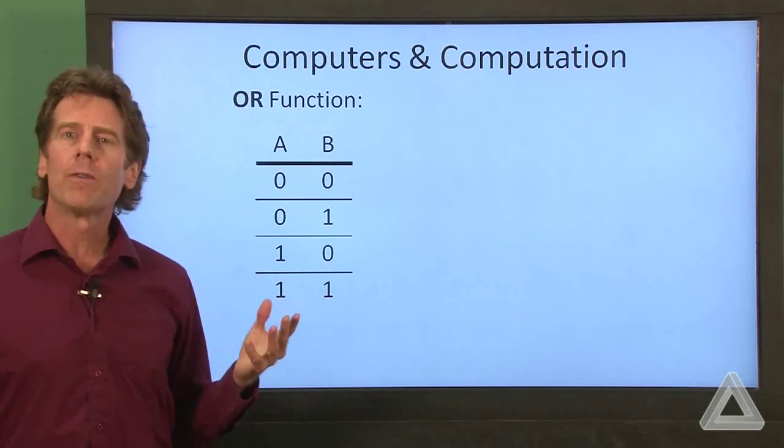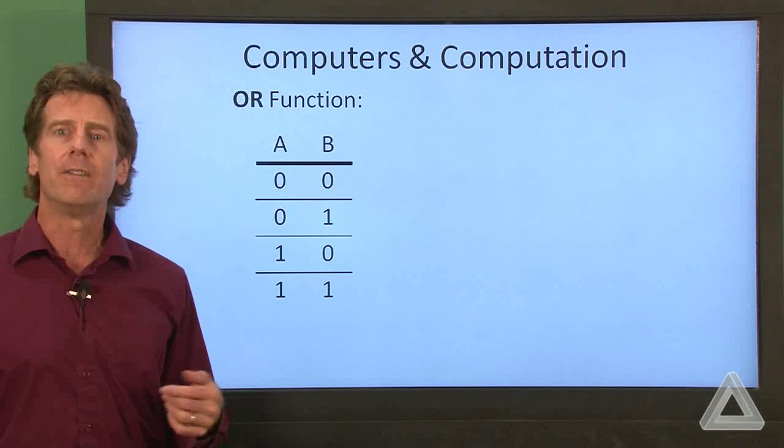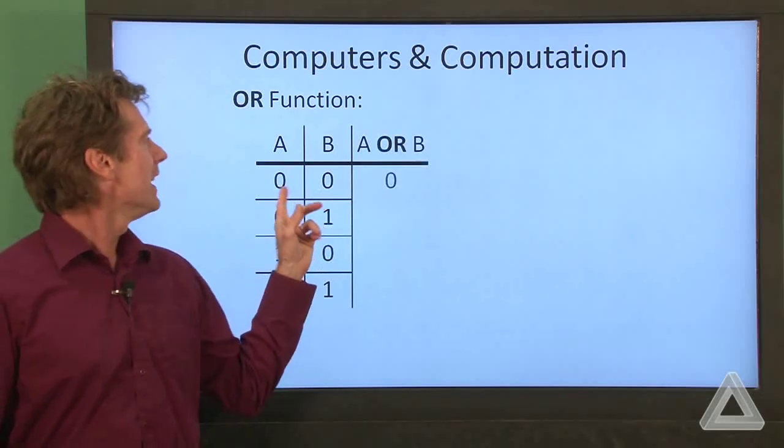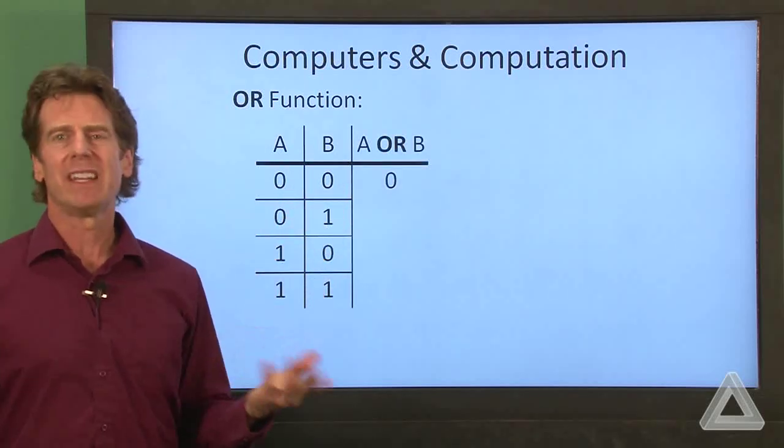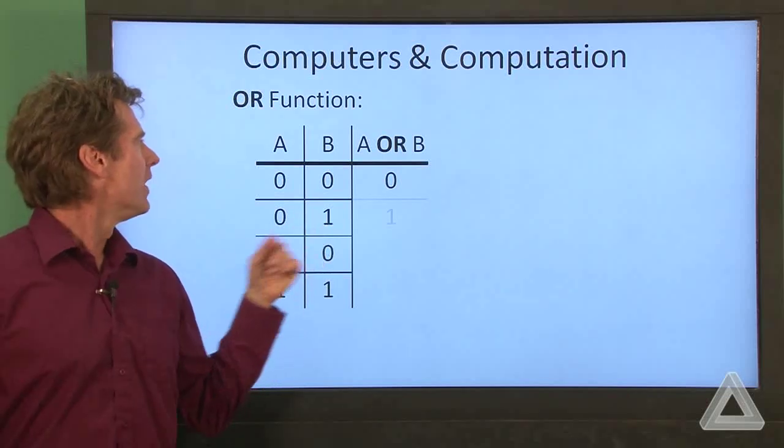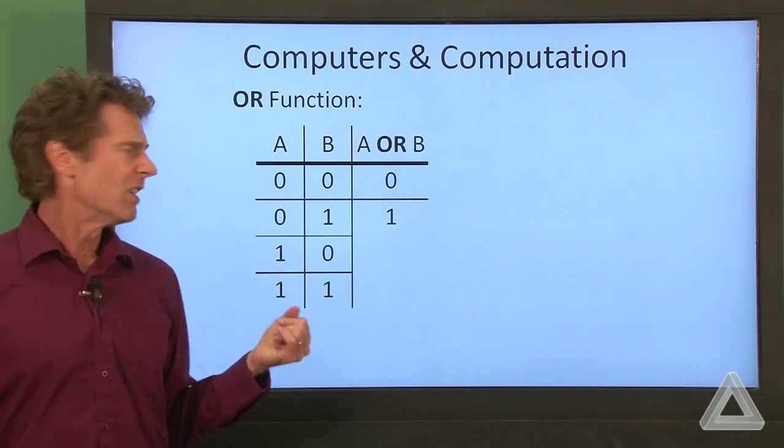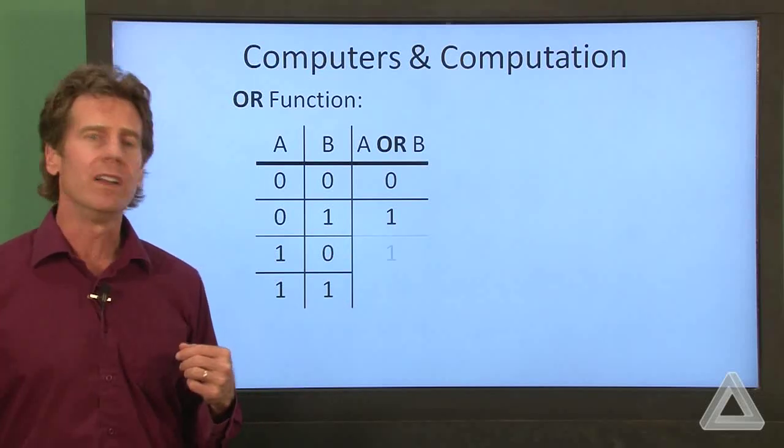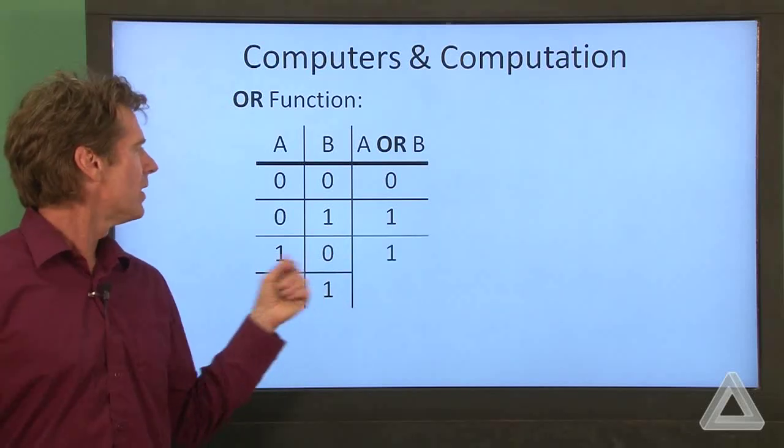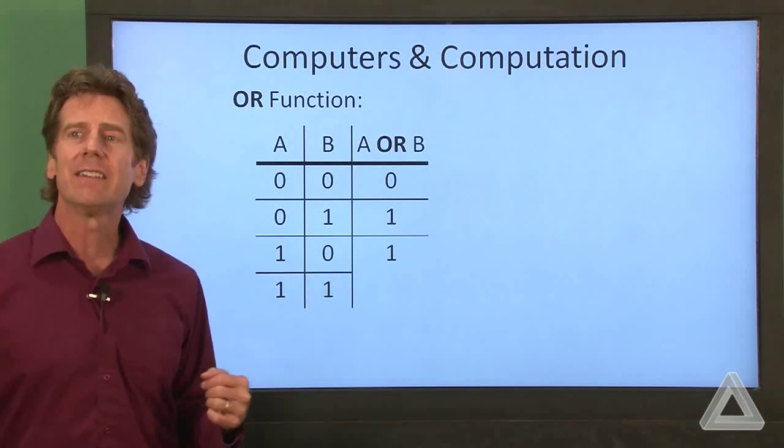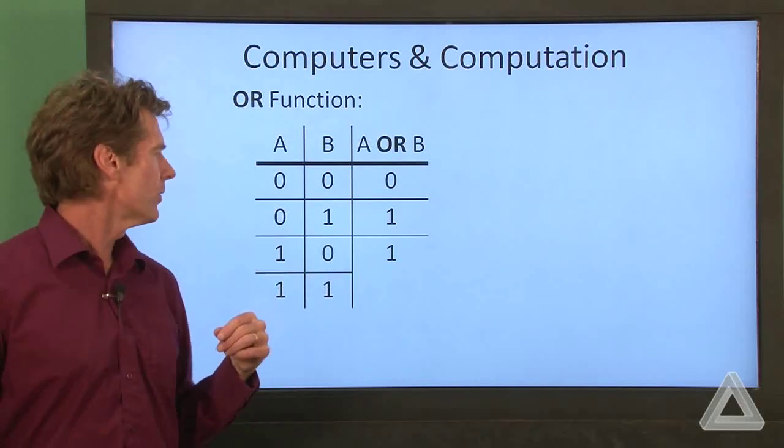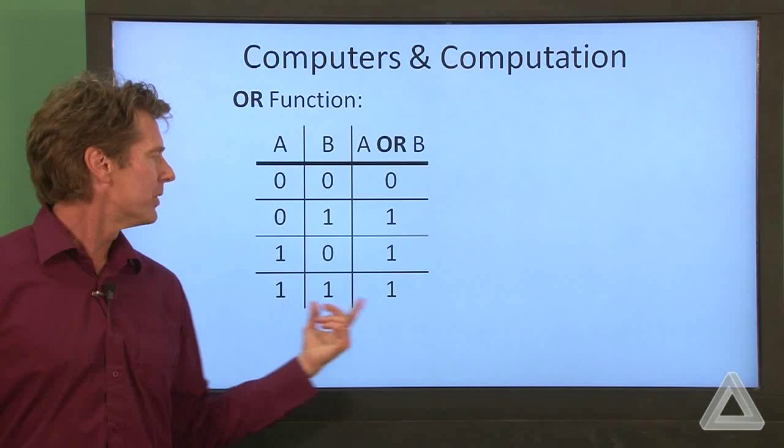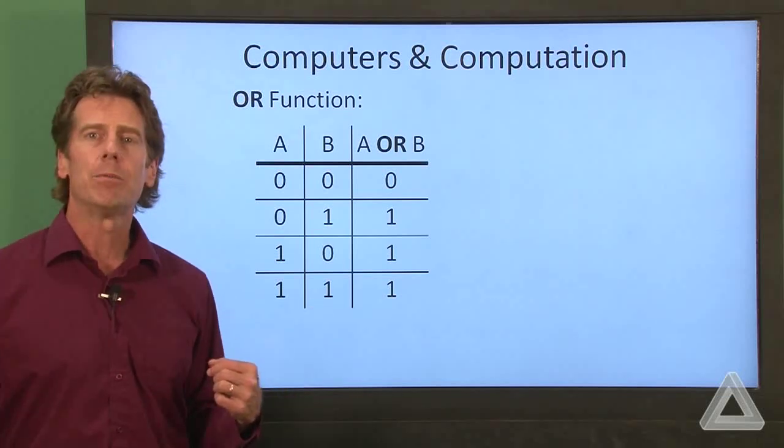Now that's our input. Those are fed into the OR function and there's a single bit of output. And if both the inputs are zero, the output's zero. If B is one or high or true, then the output is one. But if A is one and B is zero, then the output is also one. And if both inputs are one, then the output is one.